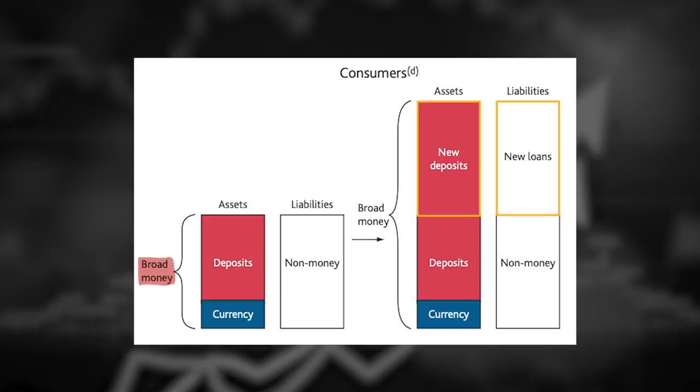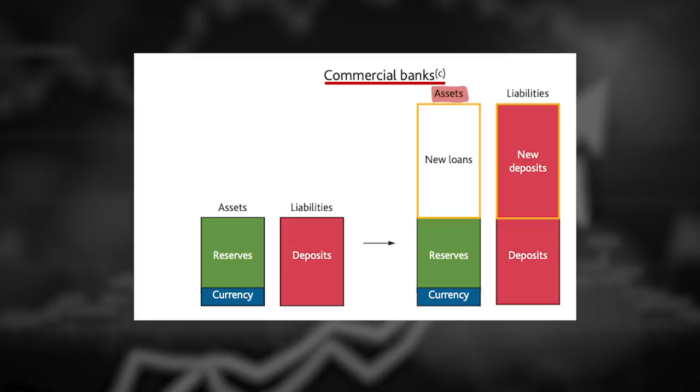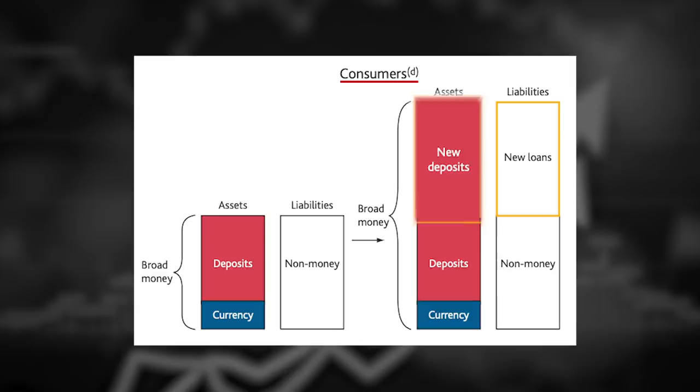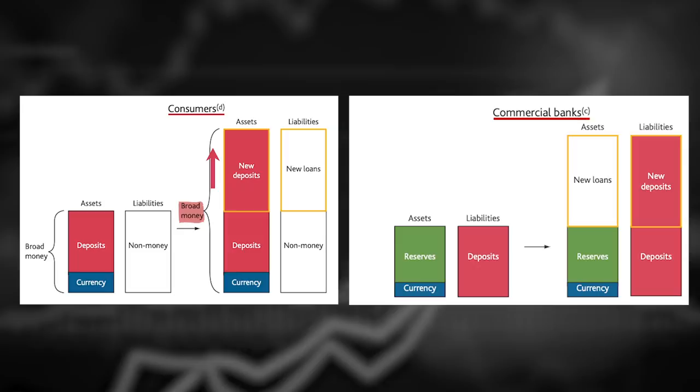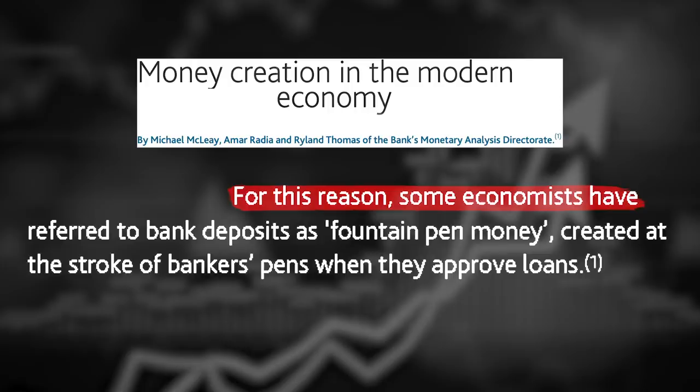When the commercial banks lend money, this creates a new loan on the asset side of their balance sheet, and it creates new deposits to match those loans that are liabilities. On the consumer's balance sheet, the new deposits created by the loans are assets, and the new loans are liabilities. And notice that the broad money has expanded and actually doubled, it looks like by this diagram, simply by the commercial banks lending more money into existence. This is why a lot of economists refer to bank deposits as fountain pen money created the stroke of a banker's pen when they approved the loan.